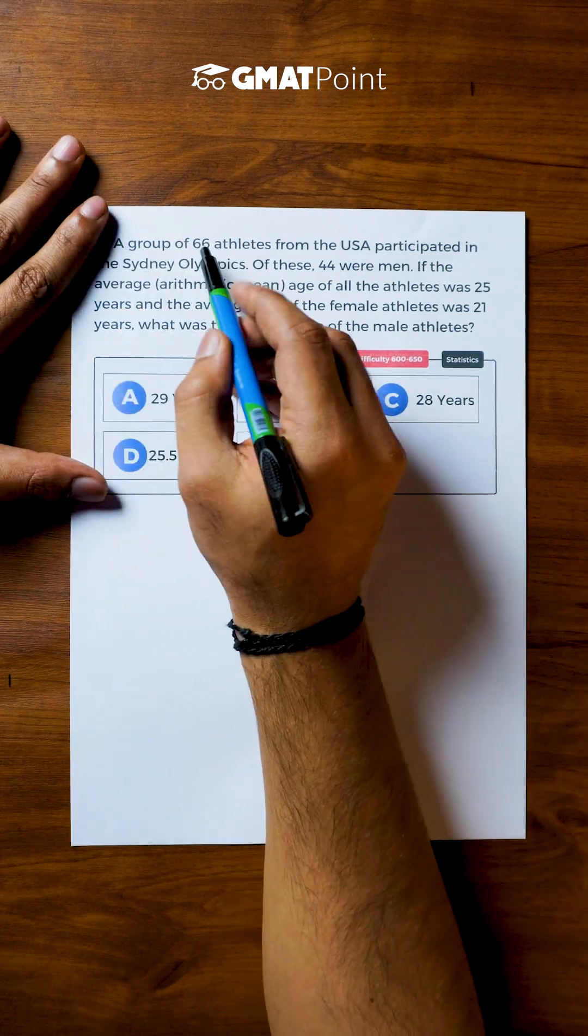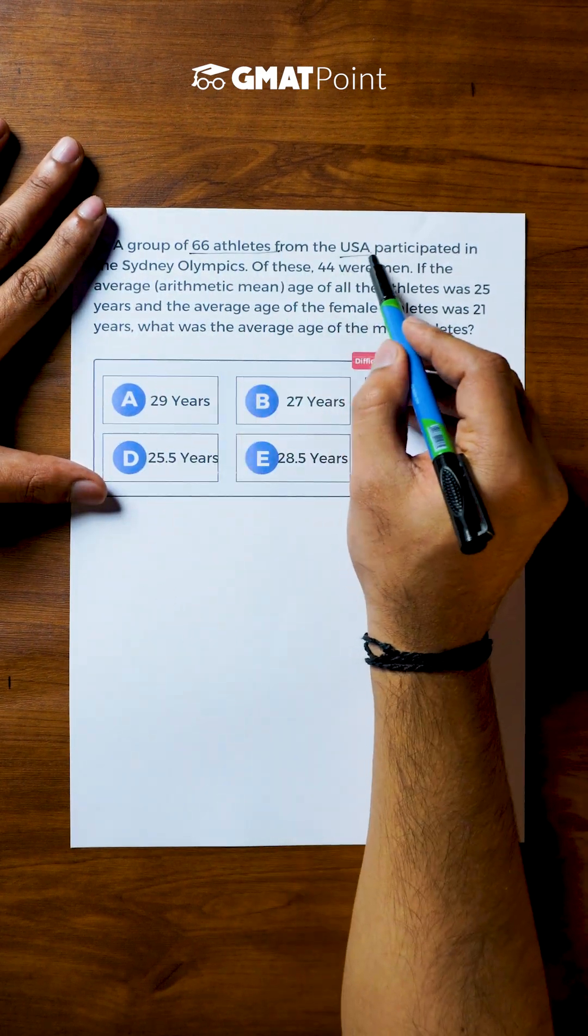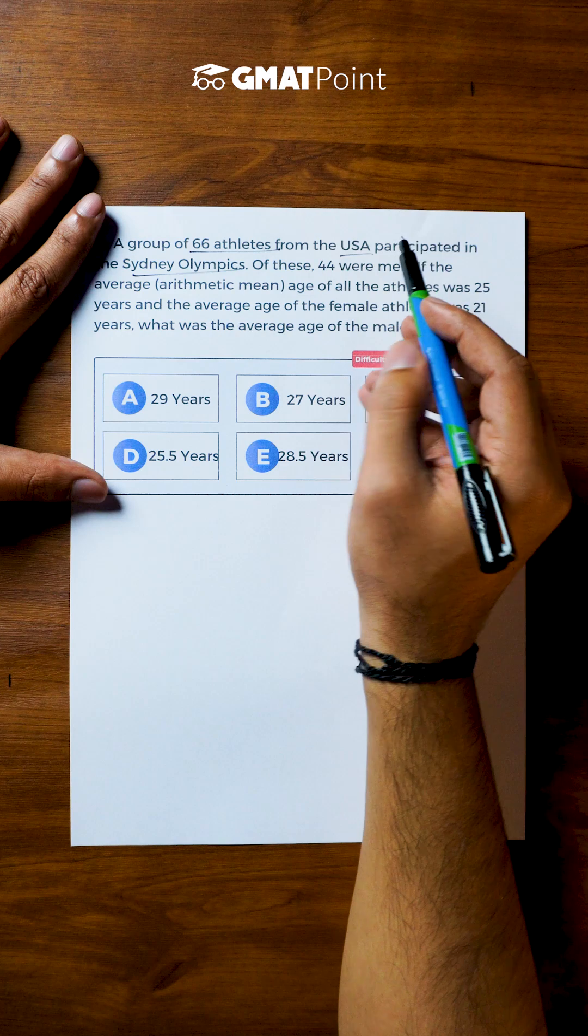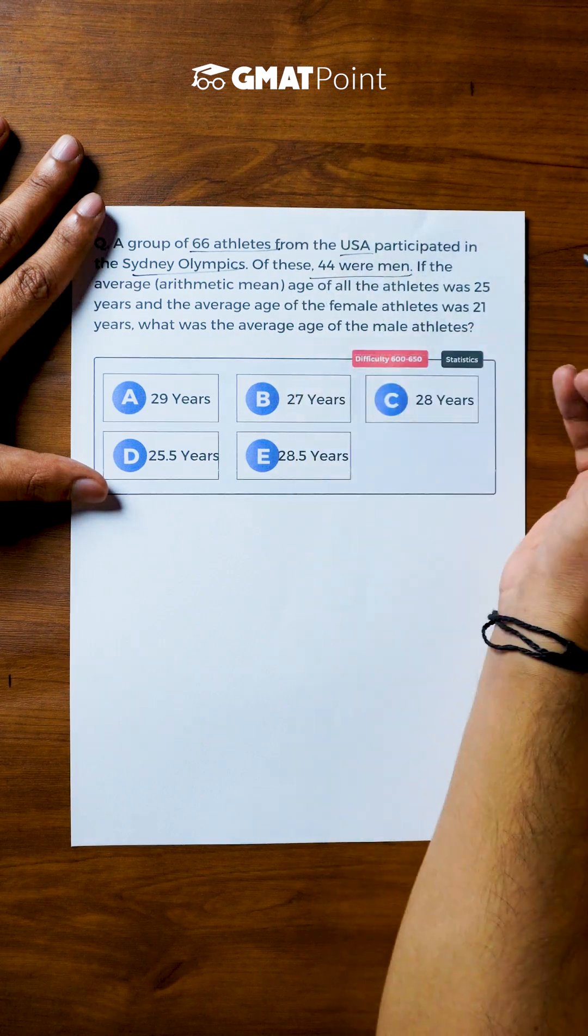Let us see how to solve this question. A group of 66 athletes from USA participated in the Sydney Olympics. Of these, 44 were men.